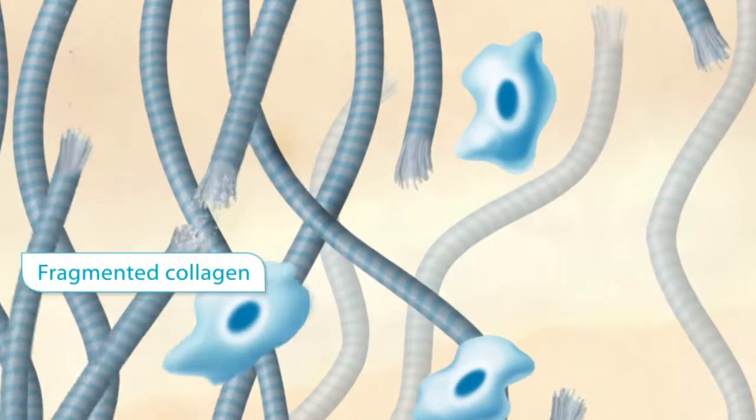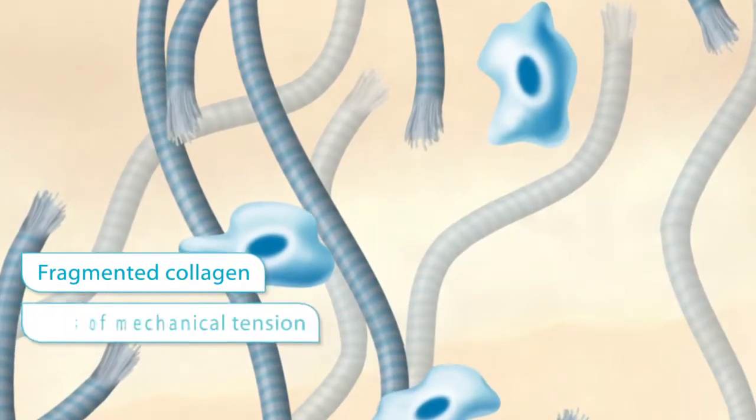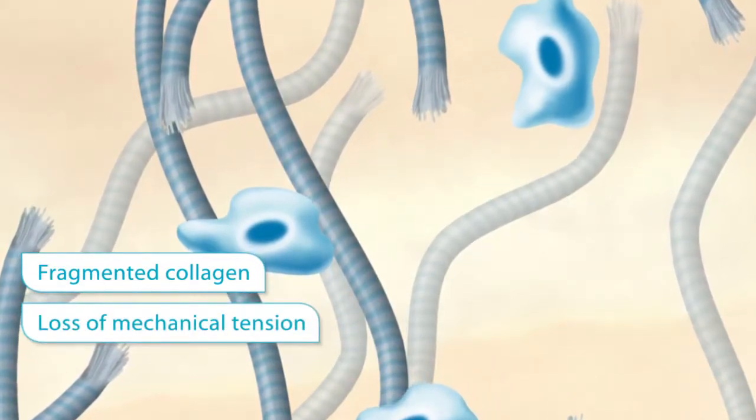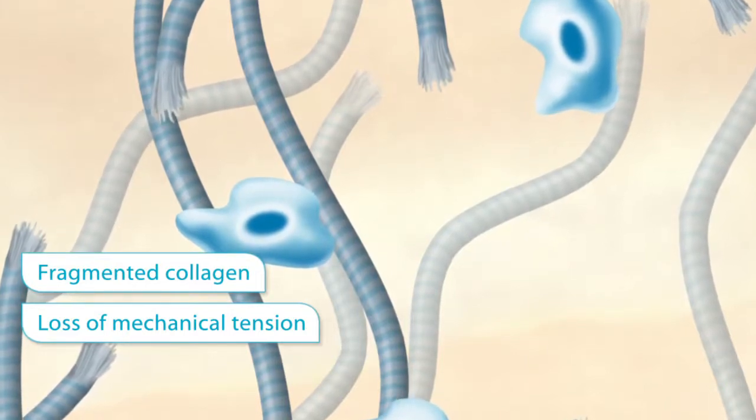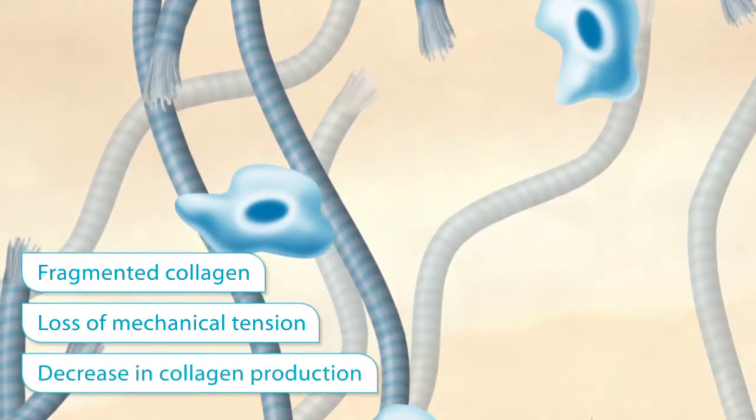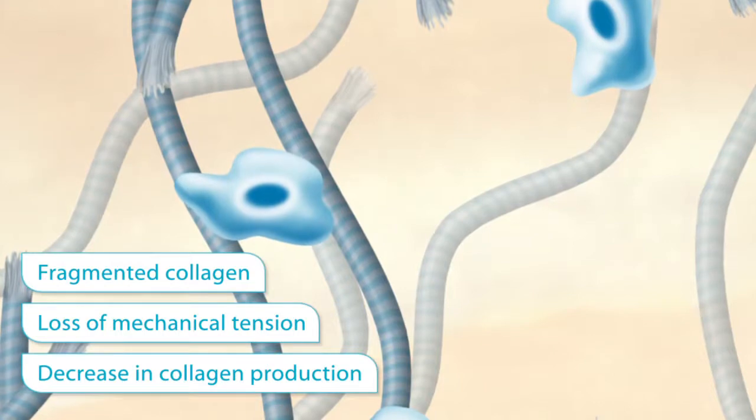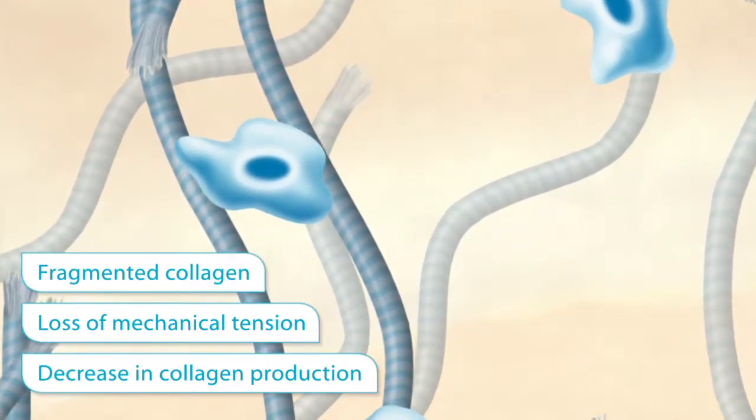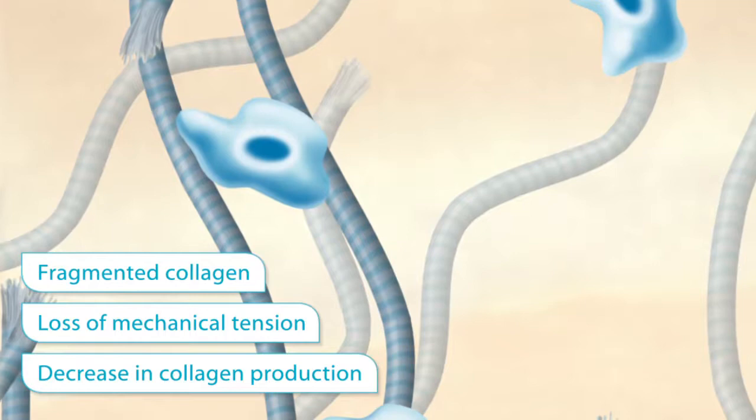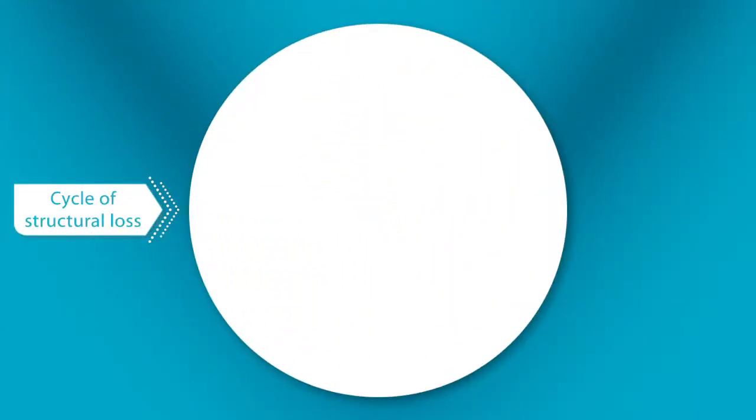Fragmented collagen accumulates. As a result, the mechanical tension decreases and fibroblast activity is impaired, leading to decreased collagen production and an increase in collagen-degrading enzymes. This reduces skin integrity and promotes a cycle of structural loss.